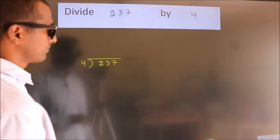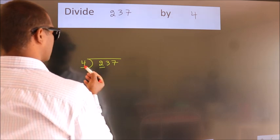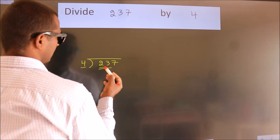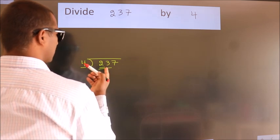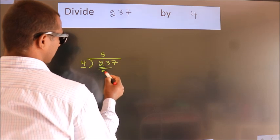Next. Here we have 2. Here 4. 2 smaller than 4. So we should take 2 numbers. 23. A number close to 23 in 4 table is 4 5s 20.